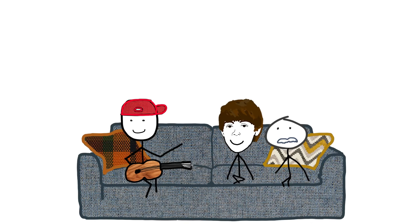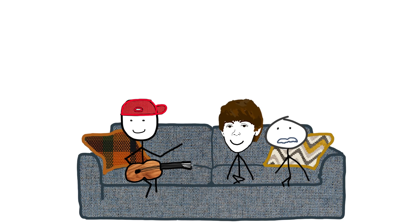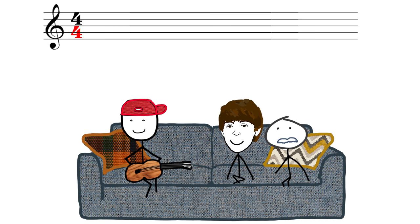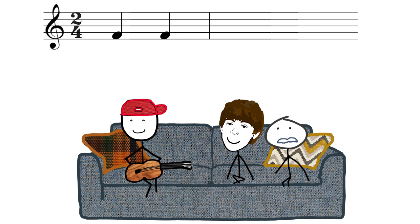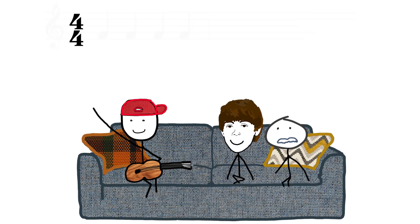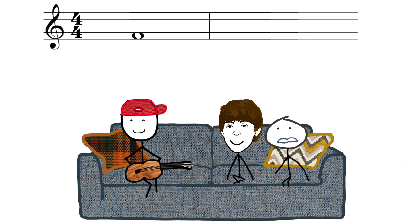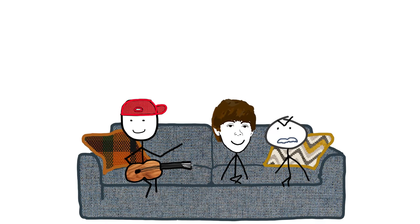And then, to tell you how many notes go into a bar, you have what's called a time signature — that's these two numbers at the start of the staff. The bottom one is basically a numeric representation of the note values: a two is a half note, a four is a quarter note, and an eight is an eighth note. The top number tells you how many of those note values you can fit in a bar. So two-four means you can fit two quarter notes, three-four means you can fit three, four-four means you can fit four. Four-four is also called common time, because it's the most common time — and it's also the most straightforward. A whole note lasts a whole bar, a half note half a bar, a quarter a quarter. Whereas with three-four time, a quarter note lasts one-third of a bar.